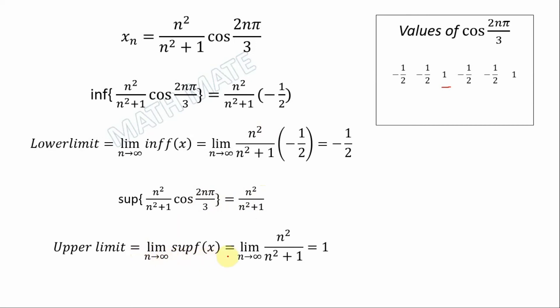The upper limit equals the limit of the supremum of x_n. We do the same by dividing the top and bottom by n². We have 1 divided by 1 plus 1/n², which gives us 1.